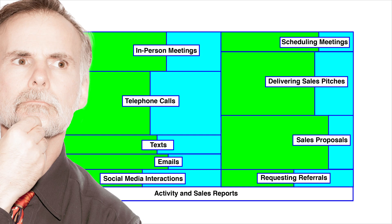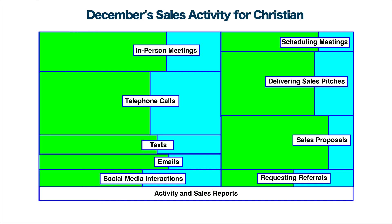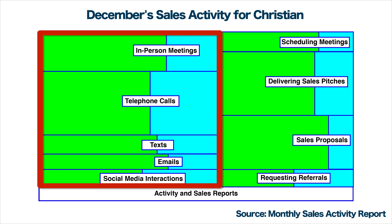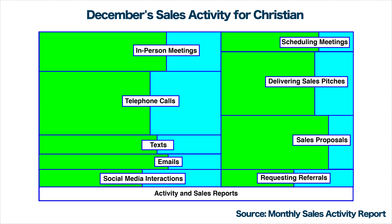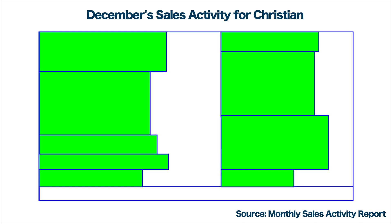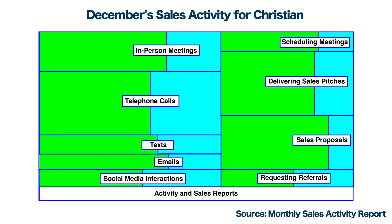Based upon the percentage of time devoted to these different responsibilities, you created a tree map for last month's sales activities for each salesperson. At the top of the map is the title identifying the different salespeople at Yamalicious, and the data source is at the bottom. The tree map is organized into three branches: communicating with current and prospective customers, engaging with current and prospective customers, and reporting sales activities and sales figures. The communicating and engagement branches are further divided into leaves identifying current and prospective customer engagement. The size of the boxes represents the percentage of time that the salesperson spent on each responsibility last month.